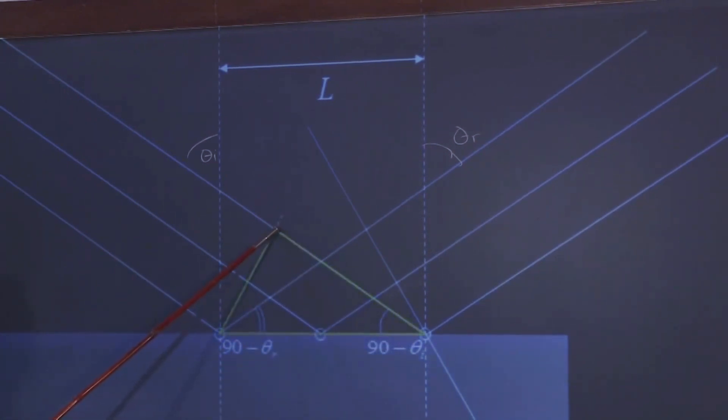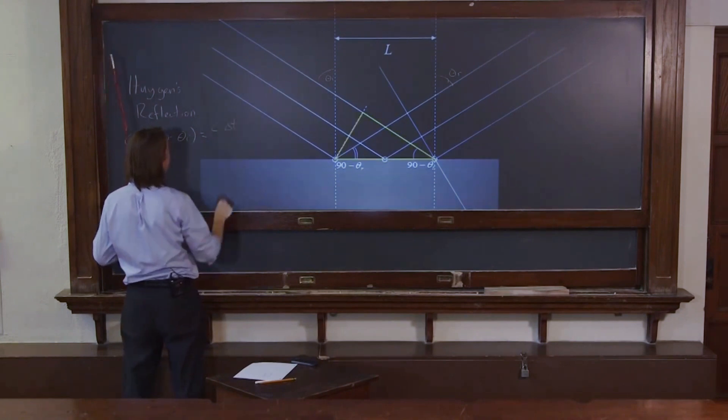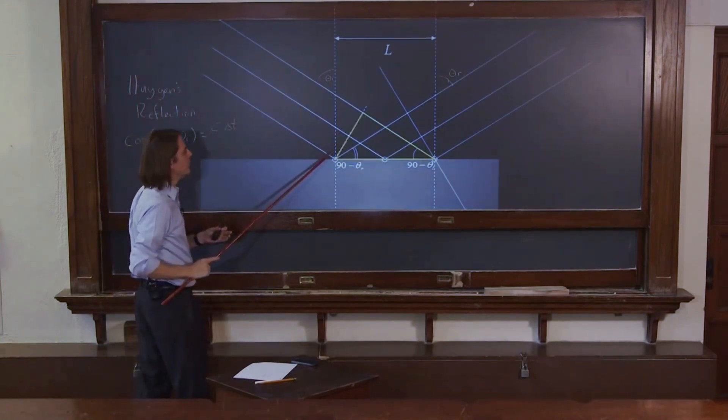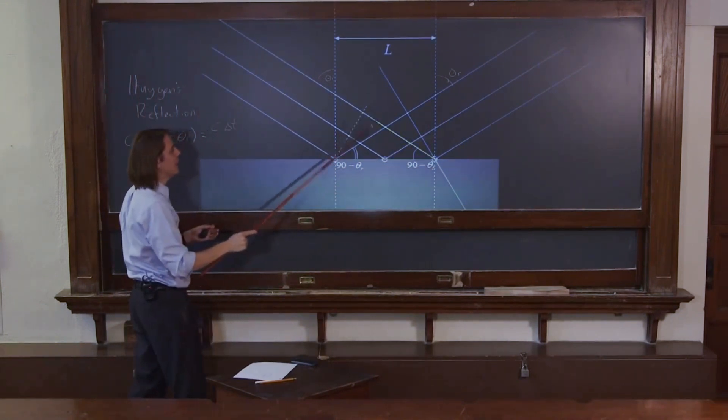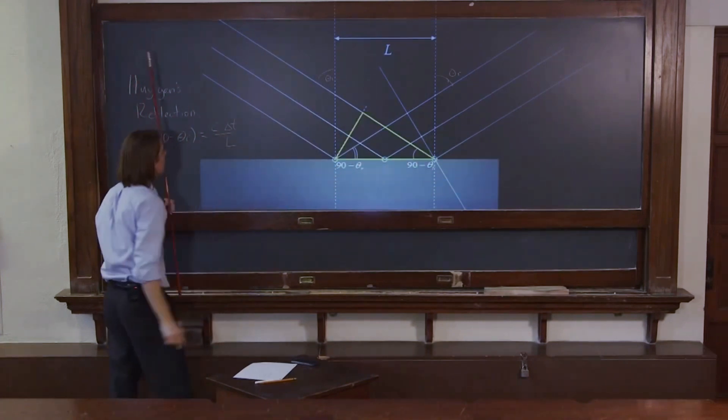The adjacent is basically the speed of light times this time delay between when this one hit and when that one hit, which we can call delta t. So the adjacent length is c times this delta t, the width of the time of this thing we're looking at. And the hypotenuse is just what we call L, adjacent over hypotenuse.